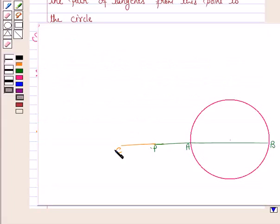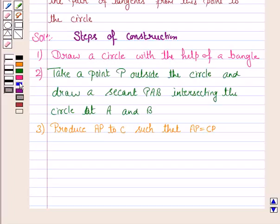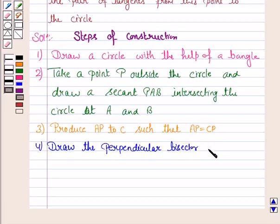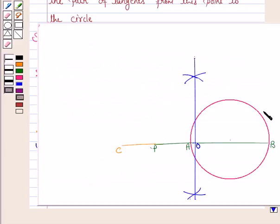Now the next step is, draw the perpendicular bisector of BC intersecting BC at O. We have drawn the perpendicular bisector of BC.